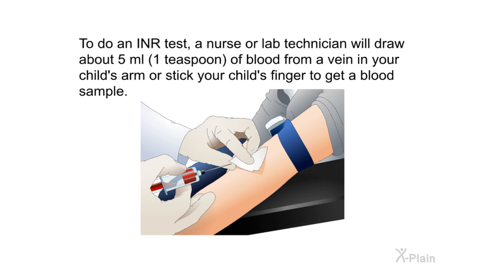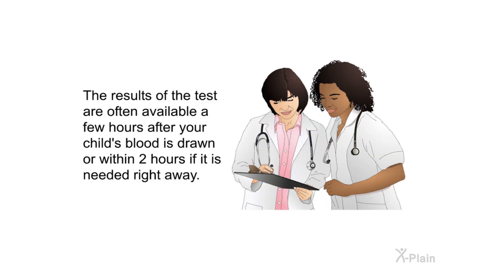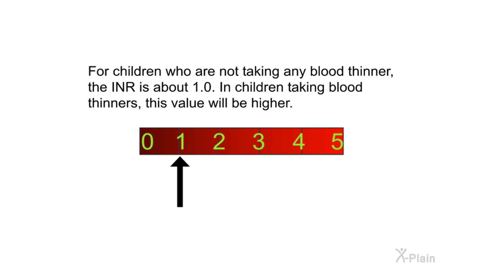The PT-INR test. To do an INR test, a nurse or lab technician will draw about 5 milliliters — one teaspoon — of blood from a vein in your child's arm, or stick your child's finger to get a blood sample. Results are often available a few hours after the blood is drawn, or within two hours if needed right away. For children not taking any blood thinner, the INR is about 1.0. In children taking blood thinners, this value will be higher.